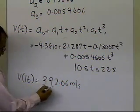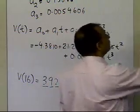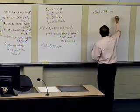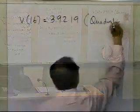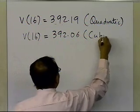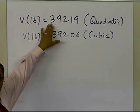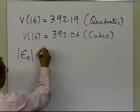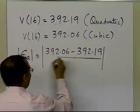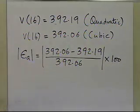Now, how do I know how many significant digits I can trust in this solution? That should be based on what I got from the previous interpolation. The value of the velocity at t=16 from quadratic interpolation was 392.19. The value from cubic interpolation is 392.06. To calculate the relative approximate error, I take (392.06 − 392.19) / 392.06 × 100, which gives 0.033 percent.